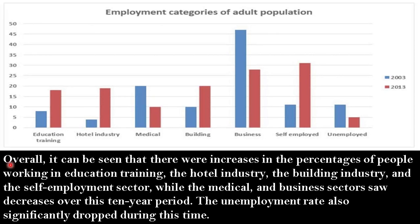Let's begin the conclusion. Overall, it can be seen that there were increases in the percentages of people working in education training, the hotel industry, the building industry, and the self-employed sector. While the medical and business sectors saw decreases over this 10-year period, the unemployment rate also significantly dropped during this time.